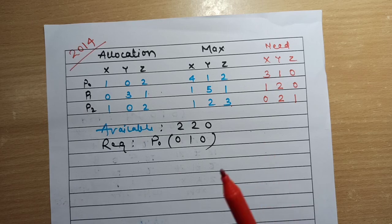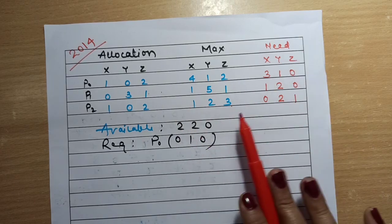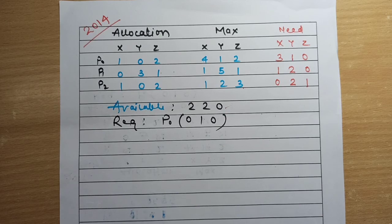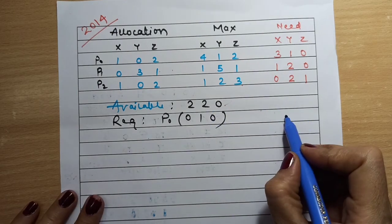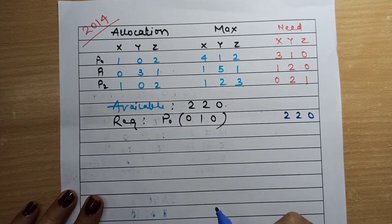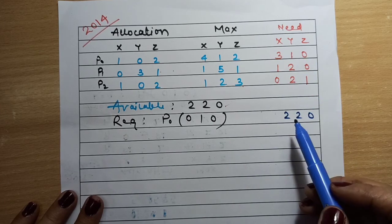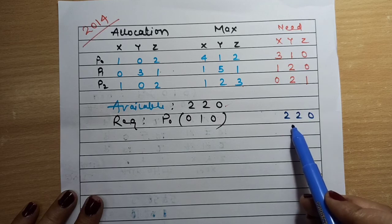Now let's try to find the current state of the system — whether it is in a safe state with the currently available number of resources. After that we will check the request. We have 2 2 0 available resources. Let's see which process's need can be fulfilled first. P0 needs 3 1 0 — we cannot fulfill that.